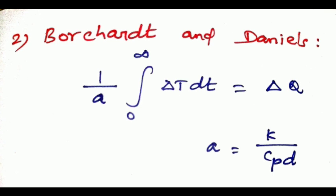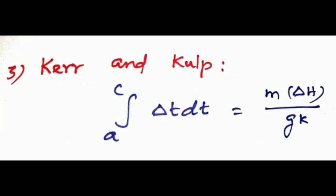Third theory for DTA is Kerr and Culp. The integral from a to c of delta T dt equals m times delta H by gk, where m is the mass of the sample, delta H is enthalpy change, a and c are the integration limits, and g is a constant.